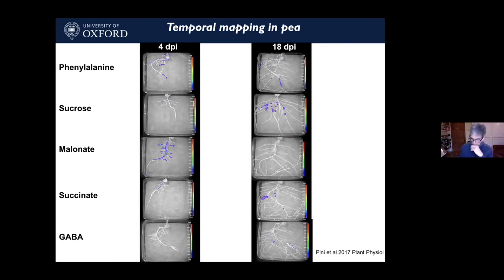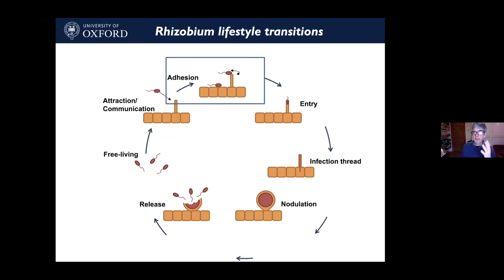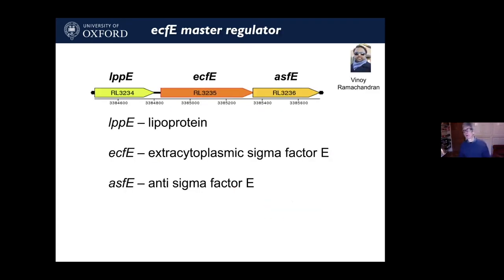You can do the same for gene expression where there's a temporal and spatial basis on roots. Looking at the next stage — adhesion to roots — here's some work from postdoc Vinoy Ramachandran. Using microarrays, we found a little three-gene operon highly expressed in the rhizosphere, consisting of: LPP, a lipoprotein; an ECF, an extra-cytoplasmic sigma factor that can switch on a whole bunch of genes; and an anti-sigma factor that stops the sigma factor from acting. These three genes were massively induced in the pea rhizosphere, particularly the first gene LPP — almost 100-fold up-regulated.